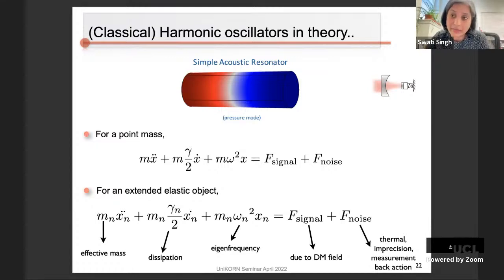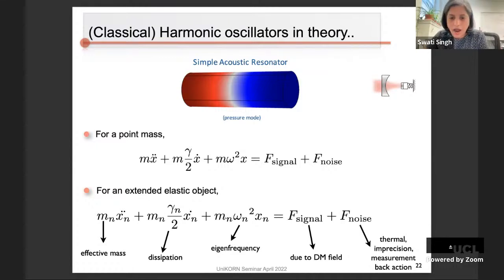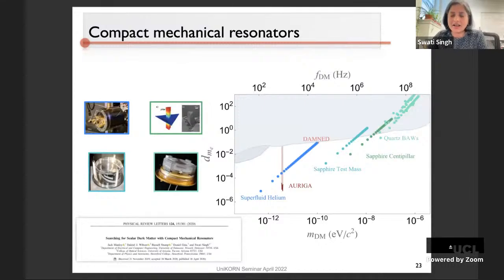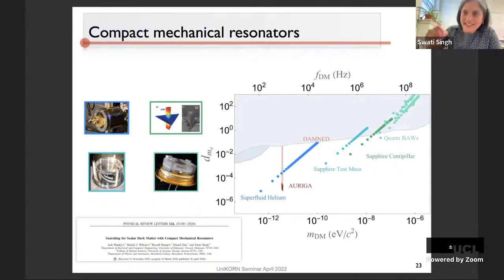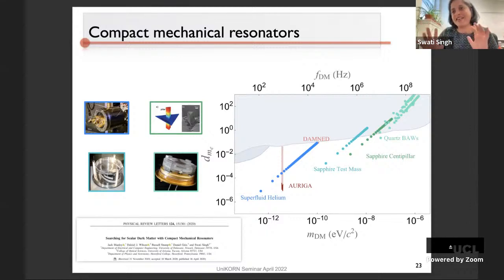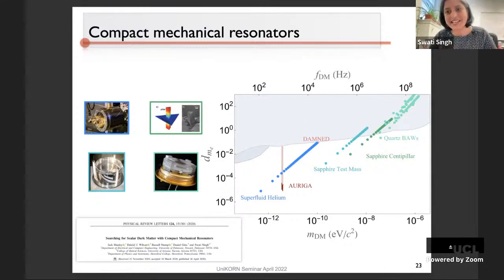The idea behind resonant mass detectors for dark matter is to probe very weak couplings between normal matter and dark matter, but over a small range of frequencies. One performs a signal-to-noise analysis including thermal noise, imprecision, and measurement back-action, then sets bounds on the coupling. We wrote a paper examining breathing modes of various systems — from bulk acoustic wave resonators to superfluid helium devices — and how their first few mechanical modes can carve out slices of this parameter space.